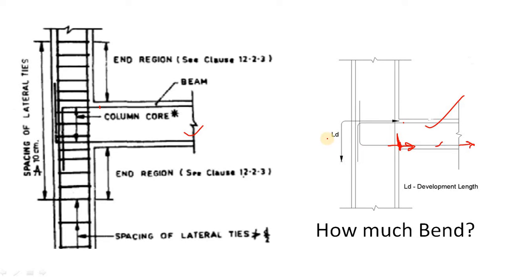From the equation of LD, the required length is calculated. But the total width of your column may not be sufficient. You cannot provide reinforcement outside the column element — that is never done in practice. So you simply bend the remaining length. Similarly, for compression reinforcement the development length is provided from that point and bent downward. This is the proper way to provide development length at any beam-column junction.